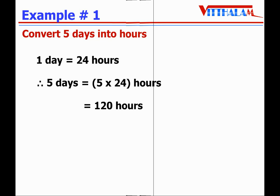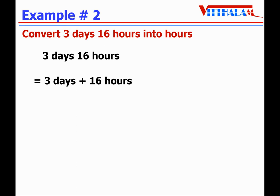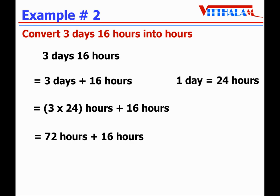Let's take another example: convert 3 days 16 hours into hours. 3 days 16 hours means 3 days plus 16 hours. We know one day equals 24 hours, therefore 3 days equals 3 multiplied by 24 hours, plus 16 hours. 3 times 24 is 72, so 72 hours plus 16 hours. We can add these because the units are the same: 72 plus 16 equals 88 hours.